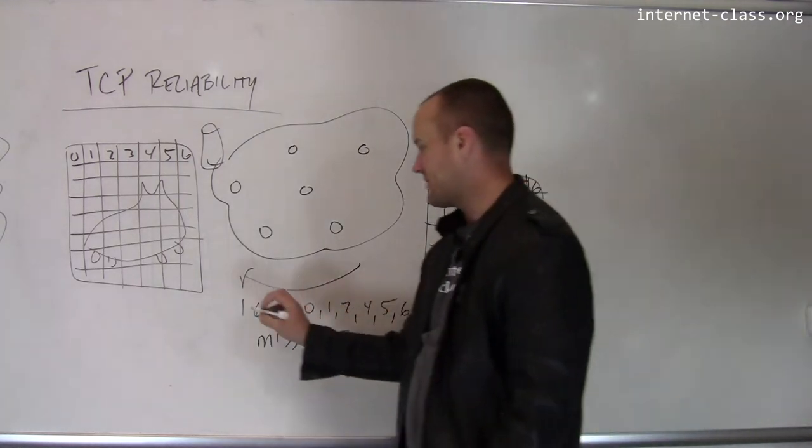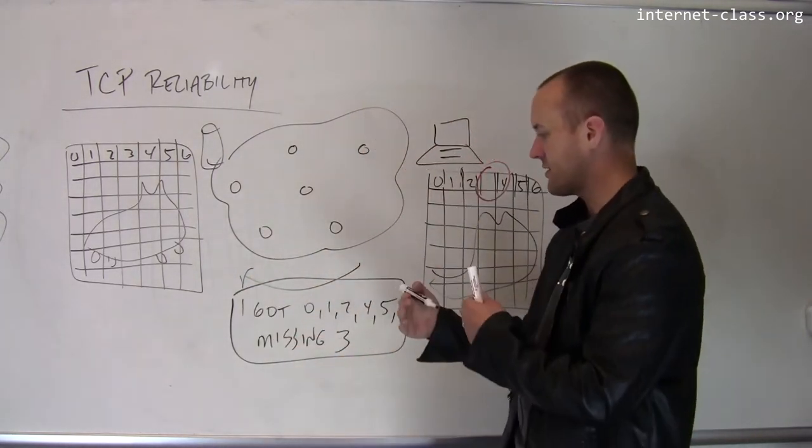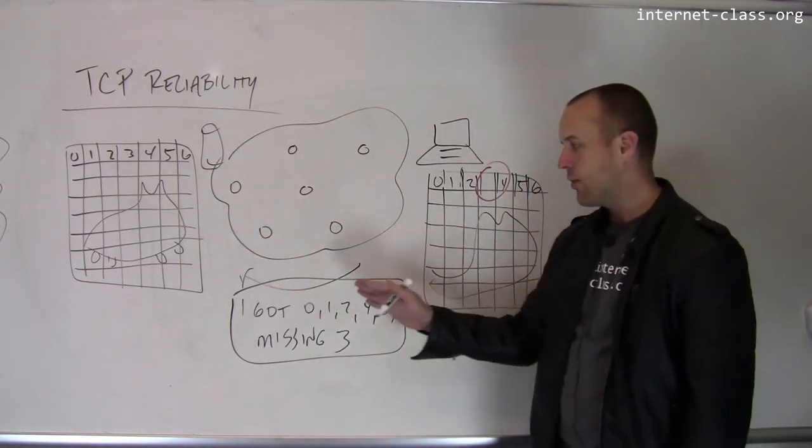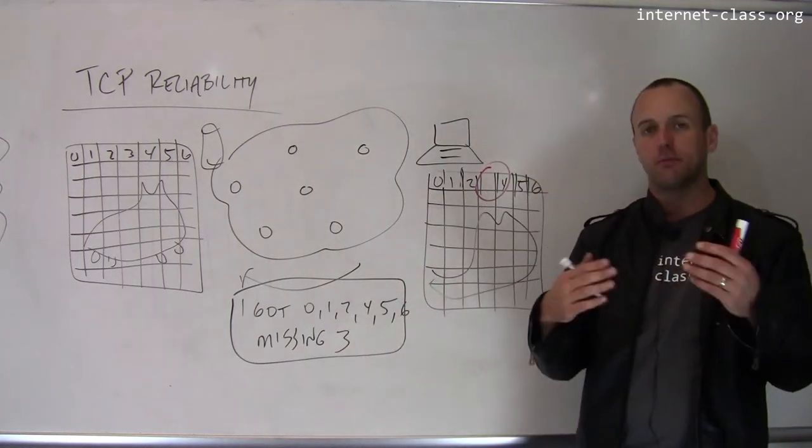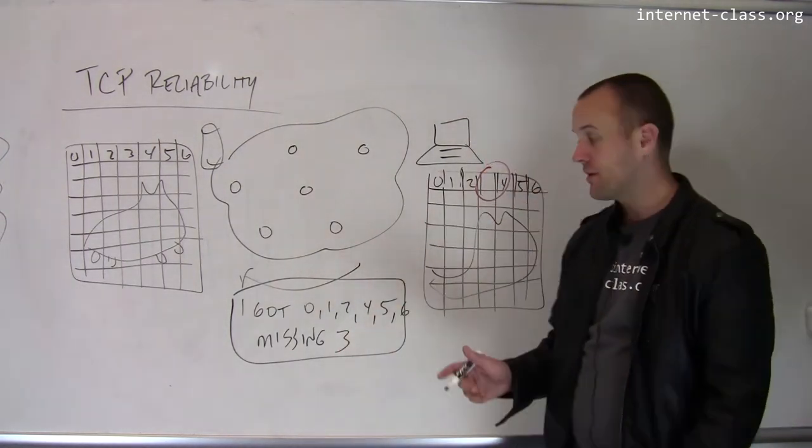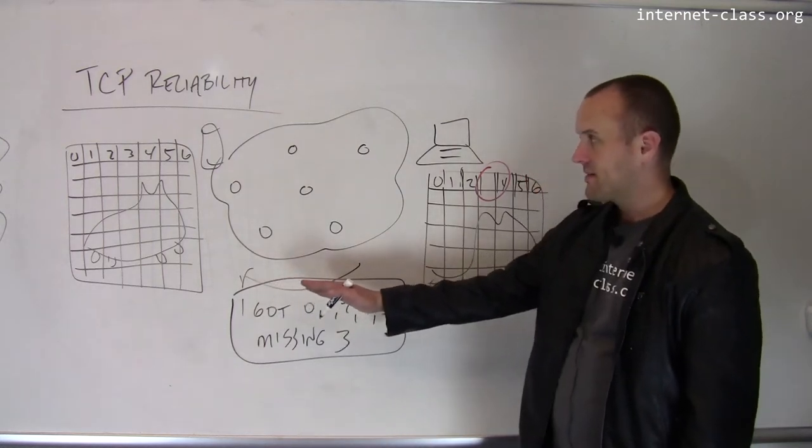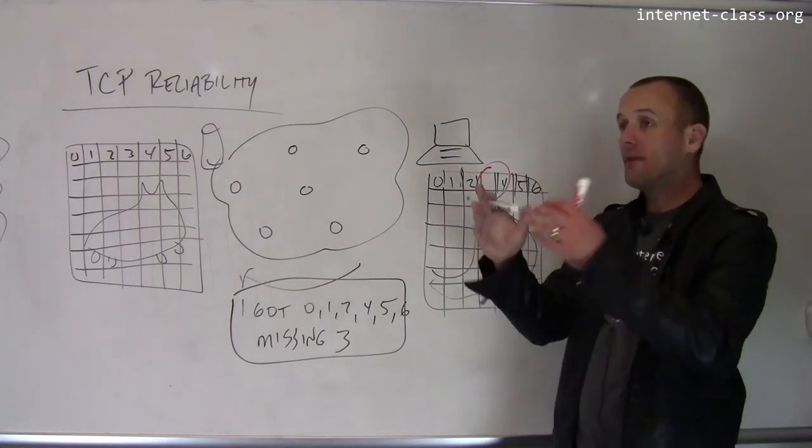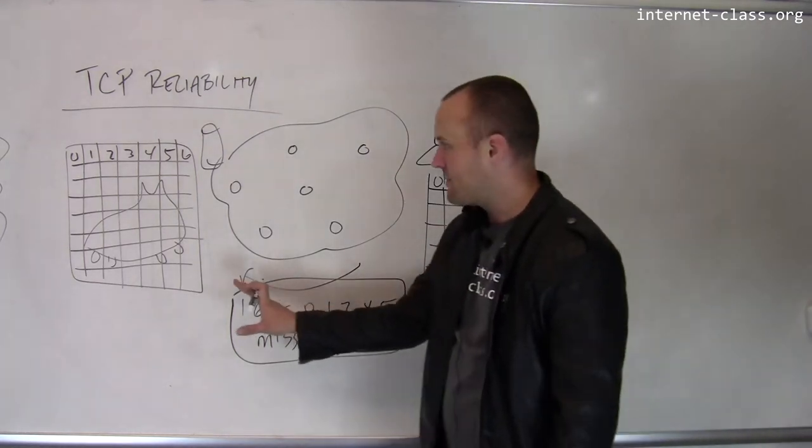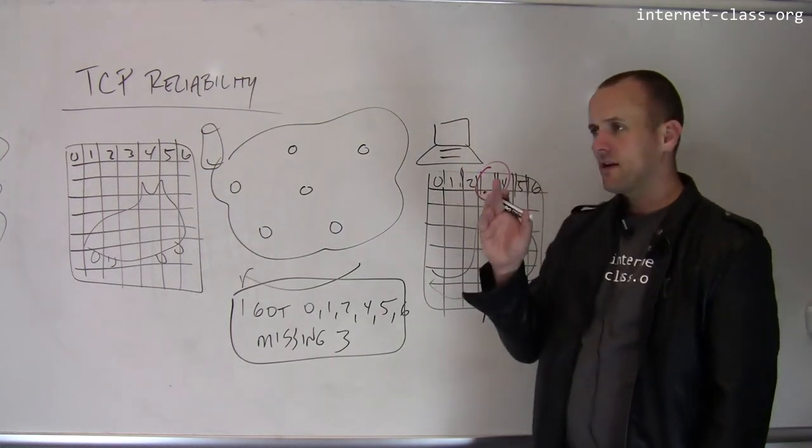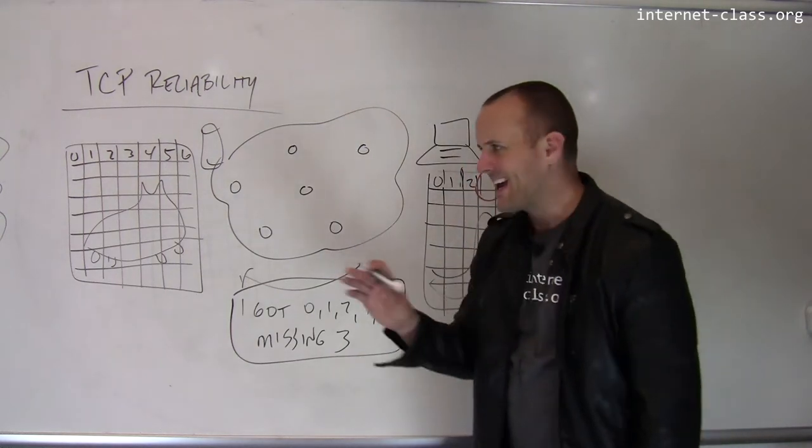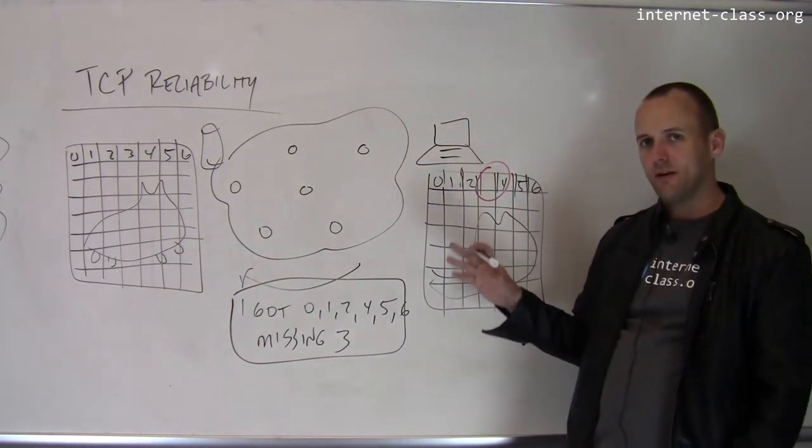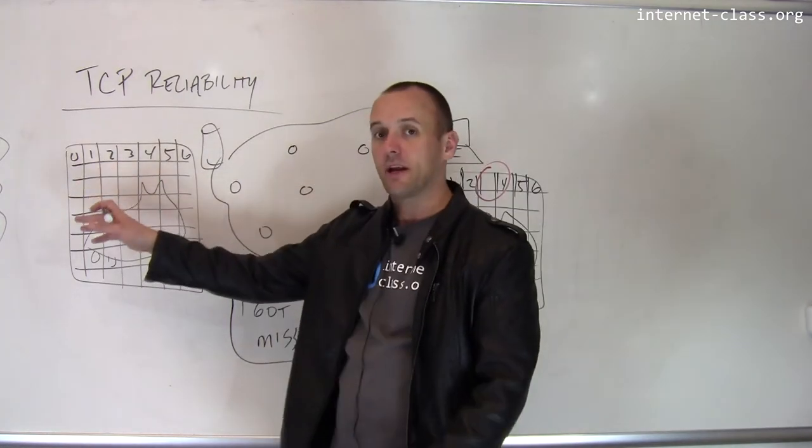One thing you might be wondering is, this information that's exchanged as part of the protocol, the information that the receiver sends back to the sender that indicates what packets it got and what packets it's still missing, what happens if it gets lost? So if this information gets lost, the sender can do the same thing. It can assume that the receiver didn't receive any of the packets. So if this acknowledgement gets lost, after some period of time, the sender will say, uh-oh, this is bad. I haven't heard anything from the receiver. It's possible that all of those packets that I transmitted weren't received, and it can retry transmitting all of them.